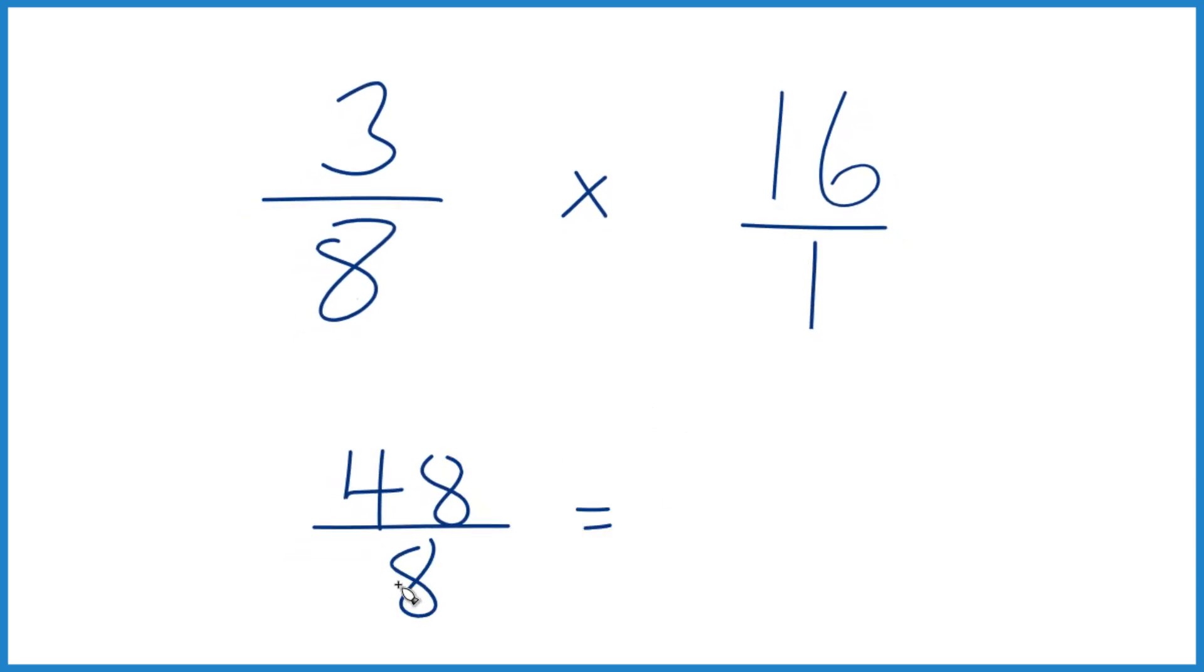So 48 divided by 8. 8 goes into 48 six times. 6 times 8 is 48. So 3 8ths of 16, that's 6.